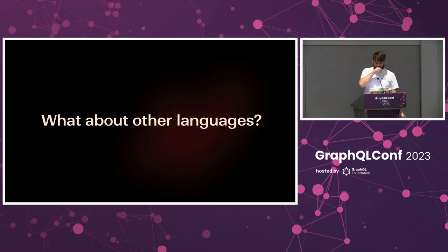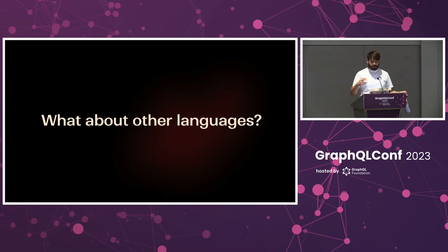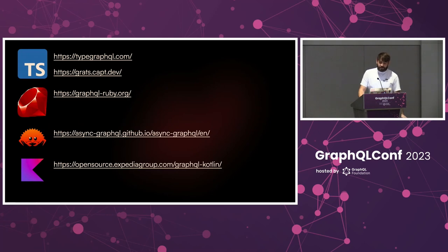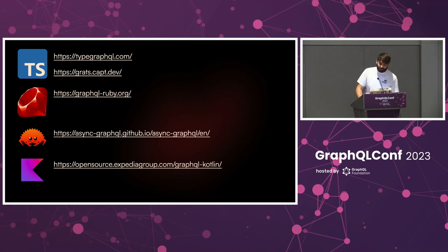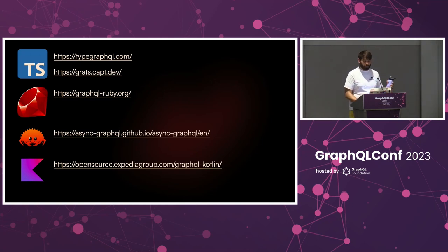Even if you're a fan of other languages, there are libraries with a similar approach to Strawberry. For TypeScript there's TypeGraphQL and Pothos. For Ruby there's GraphQL Ruby, which is quite powerful. There's also Async-GraphQL for Rust and GraphQL Kotlin. There are probably many more for other languages, so you should be able to leverage a similar Code First approach regardless of your language.